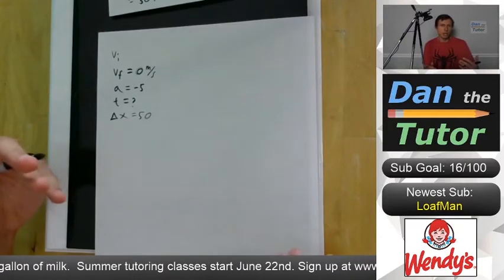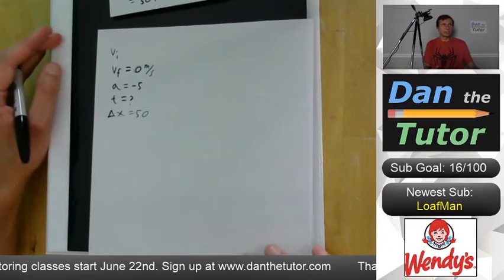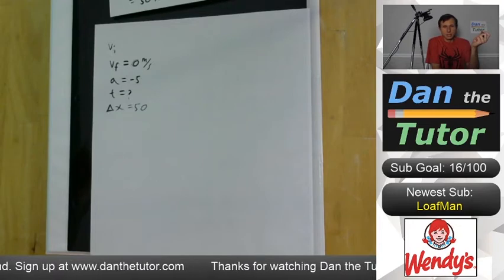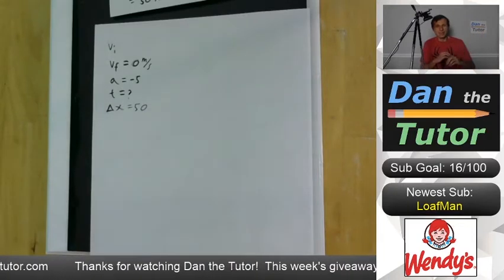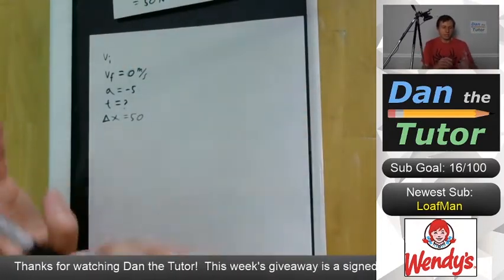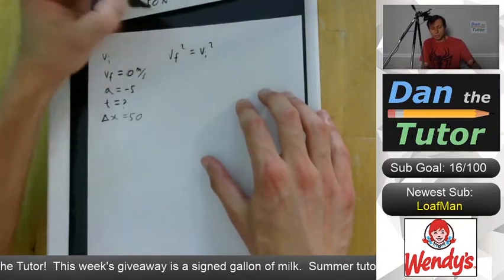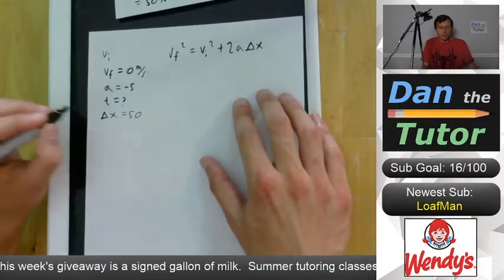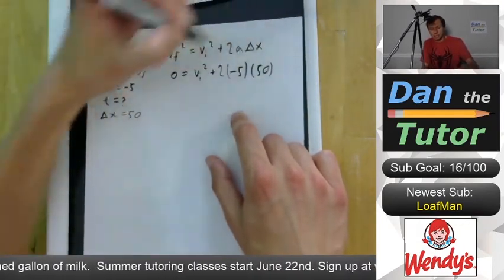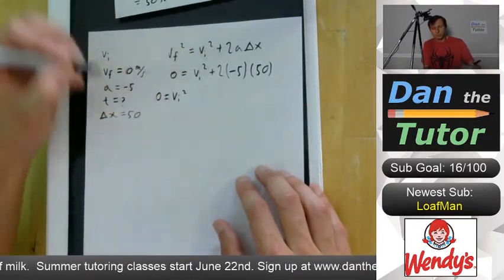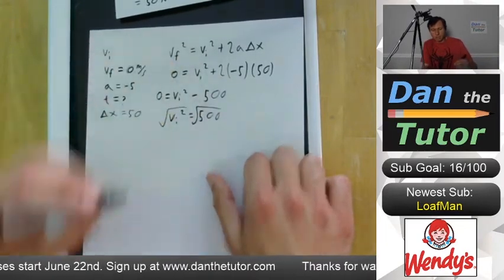We need an equation without v-initial, but actually all kinematic equations have v-initial, so we need to solve for v-initial first. Using v-final² = v-initial² + 2·a·Δx: zero equals v-initial² + 2·(−5)·(50), so zero equals v-initial² − 500, giving v-initial² = 500. So v-initial equals the square root of 500.